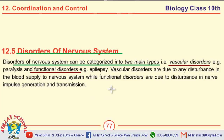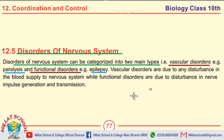The question may be asked in the form of: write two types of disorders of the nervous system. The first type is vascular disorder — for example, paralysis — and the second type is functional disorder — for example, epilepsy. We will discuss these two types further.